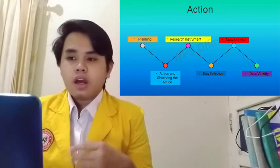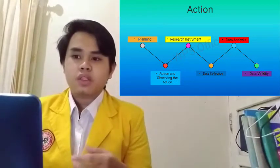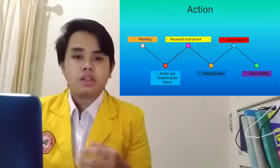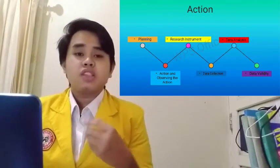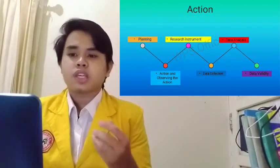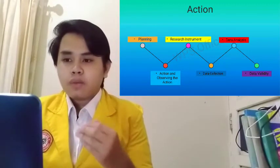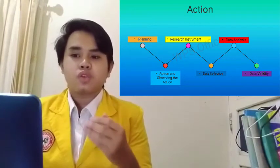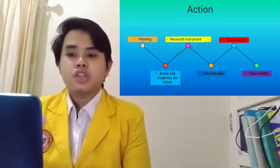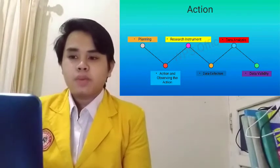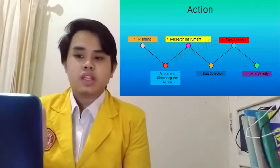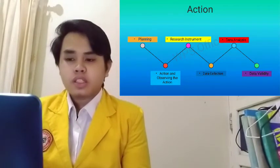And then for the Data Validity. The validity of the data was established by fulfilling the democratic, outcome, process, catalytic, and dialogic validity. In this research, the data validity was assessed by considering the result of the actions by looking to success. To get the democratic validity, the English teacher and the students were given the chance to give their ideas, suggestions, and comments about the implementation of the research. The teacher and the students were interviewed about their ideas, suggestions, critics, and comments after the actions. Their opinions were used to implement.